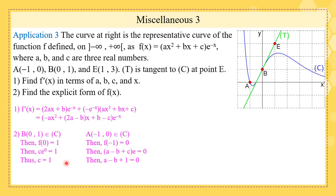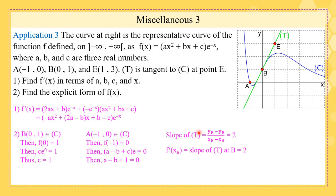Since A(−1, 0) belongs to the curve, f(−1) = 0. Replacing x by −1 gives (a − b + 1)e = 0. Since e is never zero, a − b + 1 = 0. Now, the curve C does not pass through E, but the tangent t passes through both E(1, 3) and B(0, 1). The slope of t is (yE − yB)/(xE − xB), which equals 2.